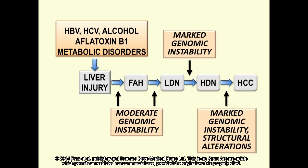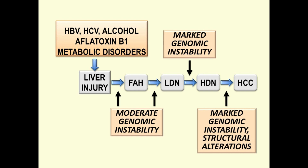Human hepatocellular carcinoma generally develops in livers with chronic disease such as hepatitis and cirrhosis. Recognizable early lesions, probably arising from hepatic progenitor cells, are represented by different subtypes of foci of altered hepatocytes that may progress to low- and high-grade dysplastic nodules and HCC. During this process, a progressive increase in genomic instability leading to structural genomic alterations occurs.